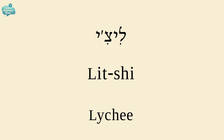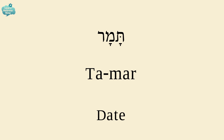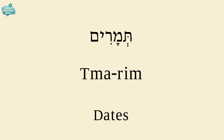The word for lychee is LYCHEE, just as in English. A date is TAMAR. And the plural for dates is TMARIM.